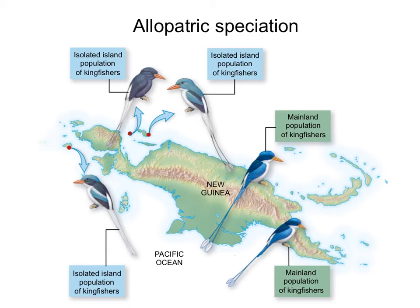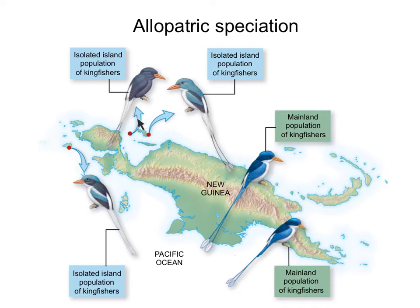Here is an example of allopatric speciation — speciation that happened in different geographical locations. These are kingfishers from New Guinea. The original mainland population migrated and colonized smaller islands near the mainland. Once they got to those areas, they didn't move back and forth, so there was not much gene flow between the populations. This reduction in gene flow due to geographical isolation resulted in the population at each island becoming a separate species.